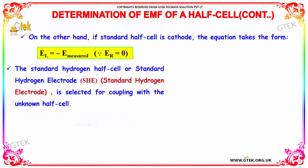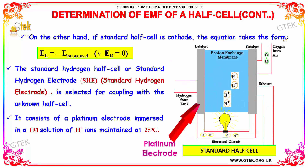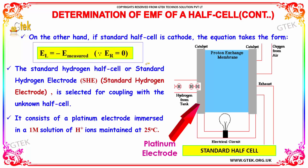On the other hand, if the standard half cell is the cathode, the equation takes the form: EL is equal to minus E measured. Therefore, in this case the value of ER will be 0.